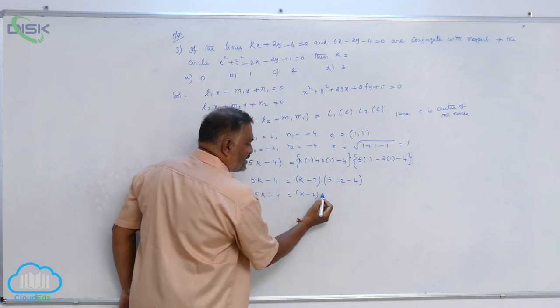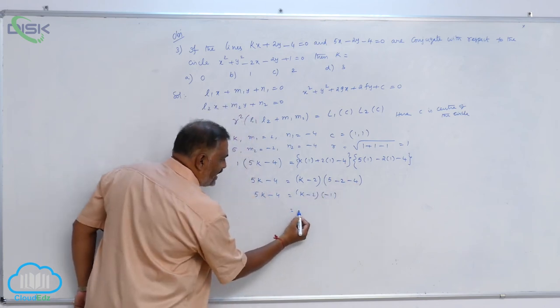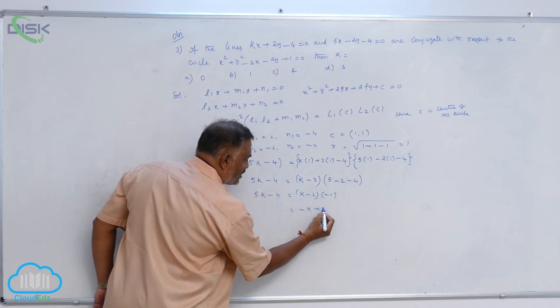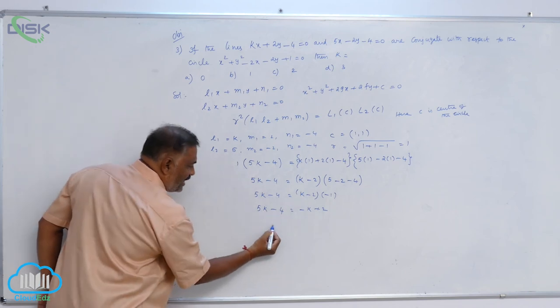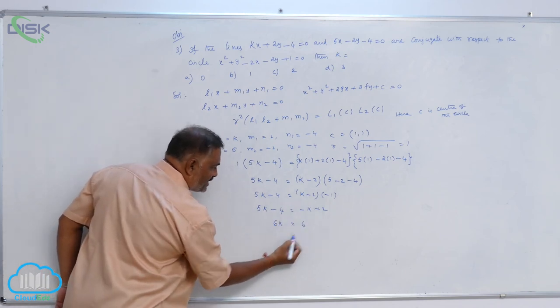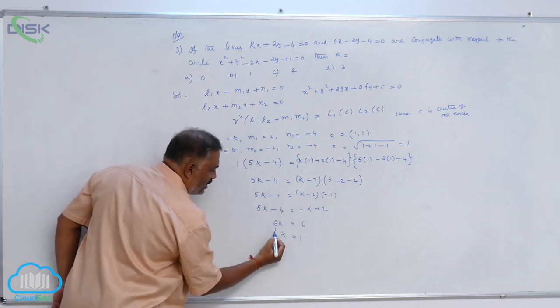This is minus k plus 2 equals 5k minus 4. Send k to this side, 6k equals 6, k equals 1.